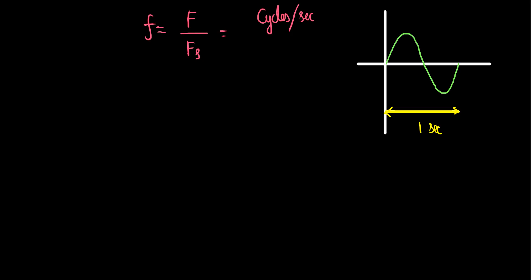Fs is the sampling frequency — it indicates how many samples we have taken along the signal. For the discrete case we take samples at every integer multiple of the sampling duration Ts. The distance between two consecutive samples is Ts. So sampling frequency Fs indicates how many samples are taken per second.